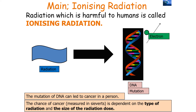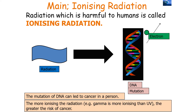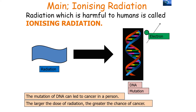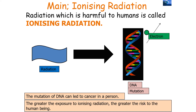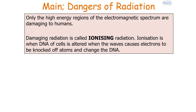The chance of cancer, measured in sieverts, depends on the type of radiation and the size of the dose. Gamma is more ionizing than UV, so carries a greater risk of cancer. The larger the dose of radiation, the greater the chance of cancer. Only the high energy regions of the electromagnetic spectrum are damaging to humans. Ionization occurs when the DNA of cells is altered as waves knock electrons off atoms and change the DNA.